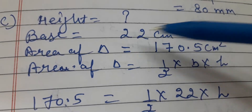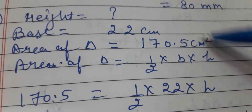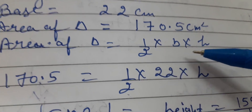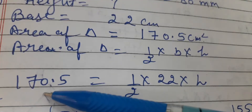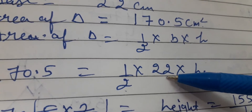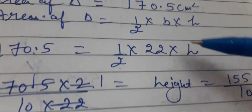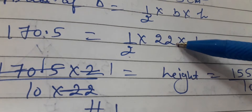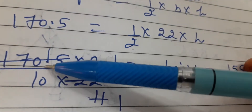Area of triangle is half into base into height. Area of triangle is 170.5, equal to half into base 22, and height is not given. I will take the 2 into the numerator and 22 into the denominator, and remove the decimal by putting 10 in the denominator.